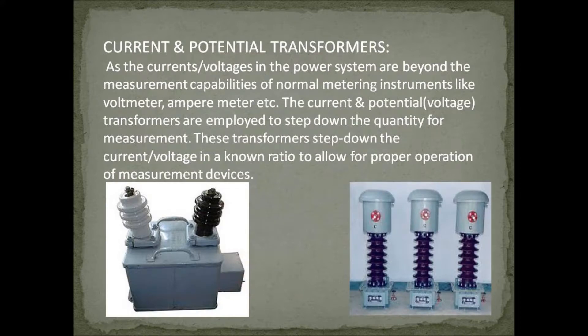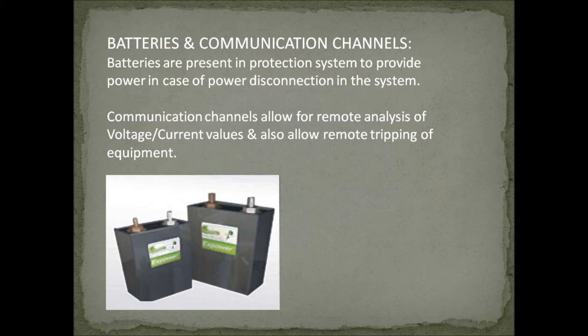As the currents or voltages in the power system are beyond the measurement capabilities of conventional measuring instruments like voltmeters and ammeters, current and potential transformers are employed to step down the quantity for measurement. These transformers step down the current or voltage in a known ratio to allow for proper operation of the measurement devices. Batteries provide power in case of disconnection of power from the system. Communication channels allow for remote analysis of voltage and current values and also allow for remote tripping of equipment.